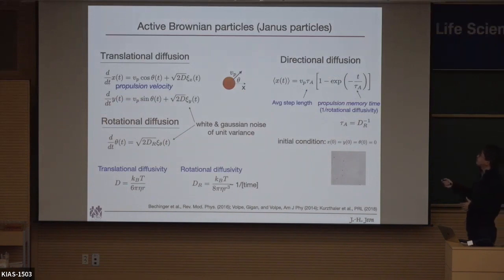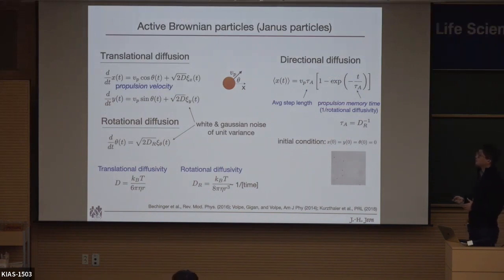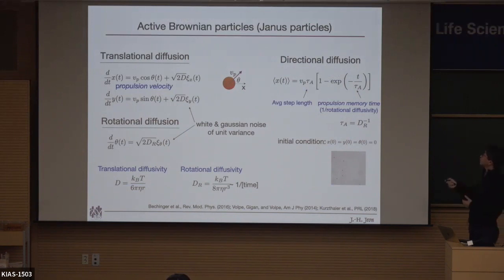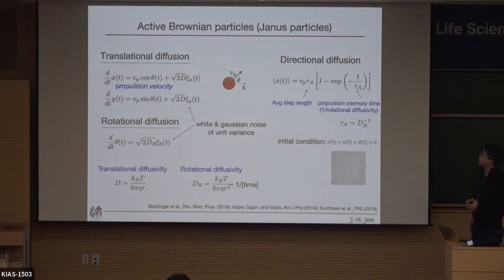This is the essential picture of what people call the active Brownian particle. Imagine one colloid particle that has two motions: one is translational, the other is rotational. When this active particle has a directional propulsion with velocity V_p, the rotation and translational motion become coupled to each other.